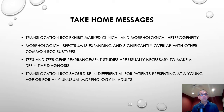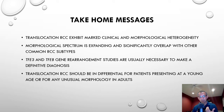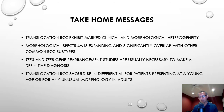In summary, translocation renal cell carcinoma exhibits marked clinical and morphological heterogeneity. The morphological spectrum is expanding as we learn more, and it significantly overlaps with other common RCC subtypes. TFE3 and TFEB gene rearrangement studies are typically necessary for a definitive diagnosis, but a panel of markers can provide a preliminary impression. The key take-home message is that translocation renal cell carcinoma should always be in your differential for patients presenting at a young age or for any tumor showing unusual morphology that is difficult to classify into a specific type.